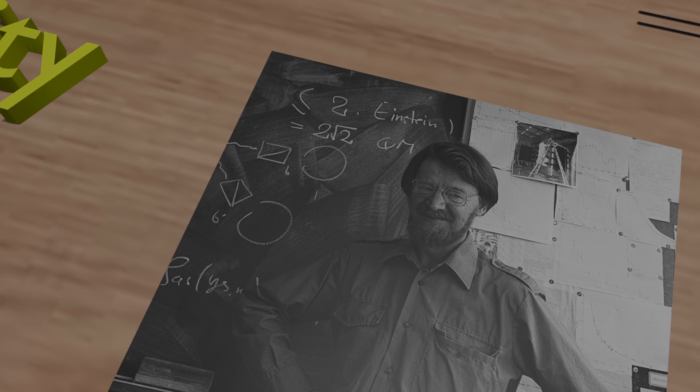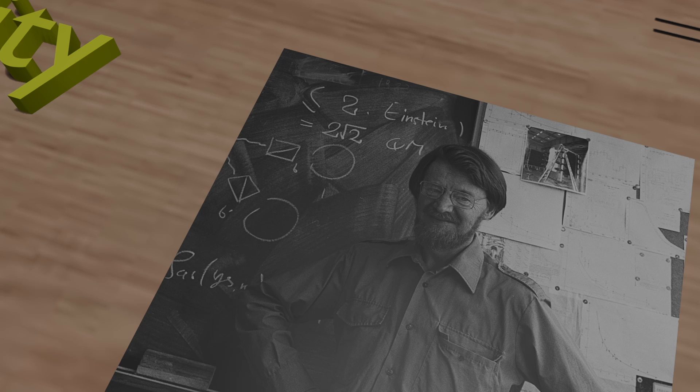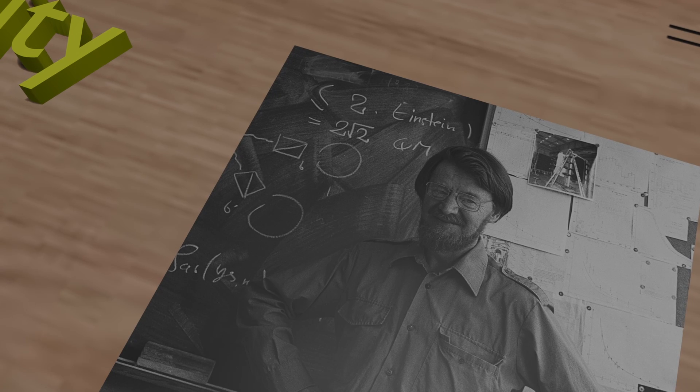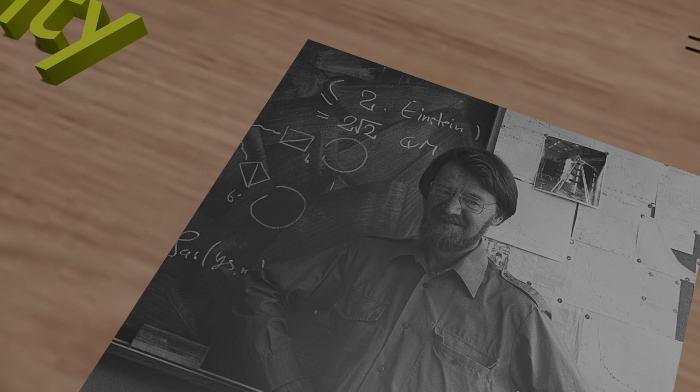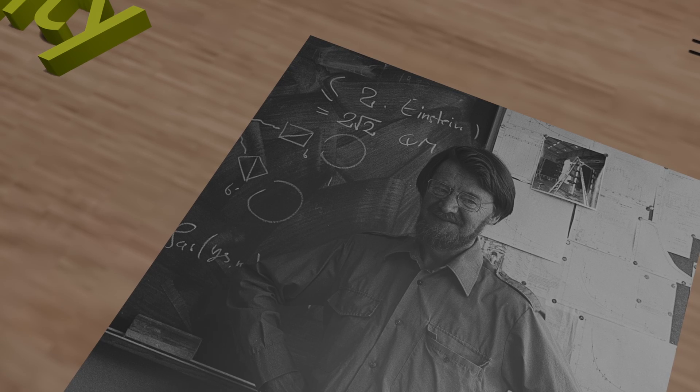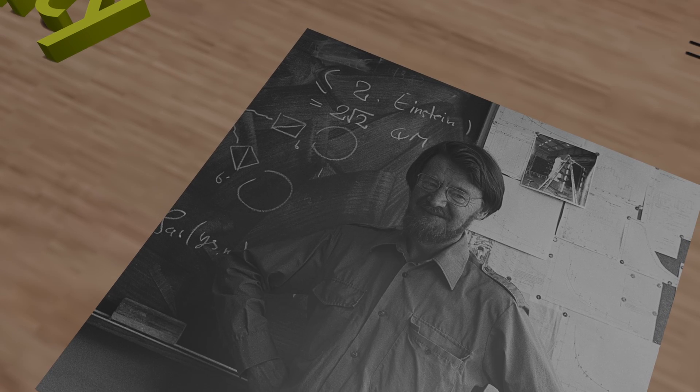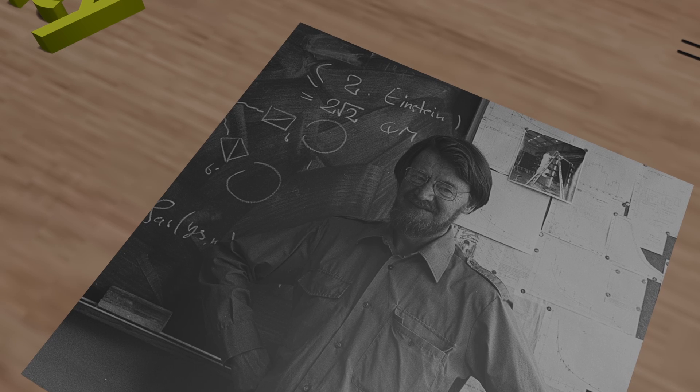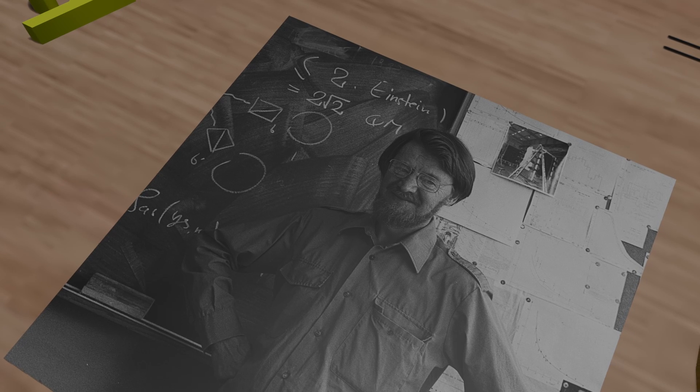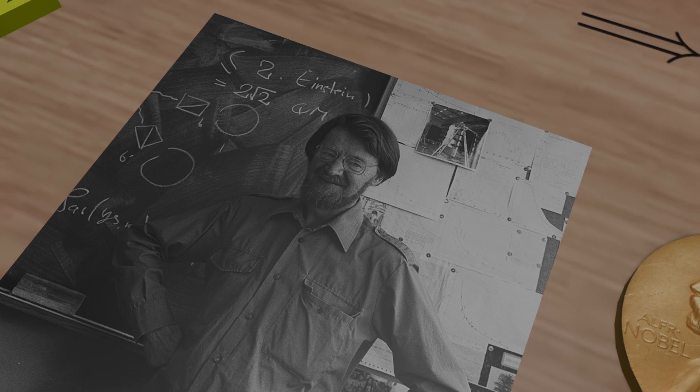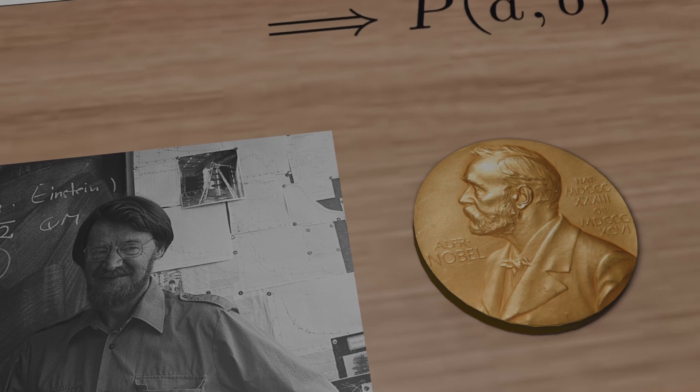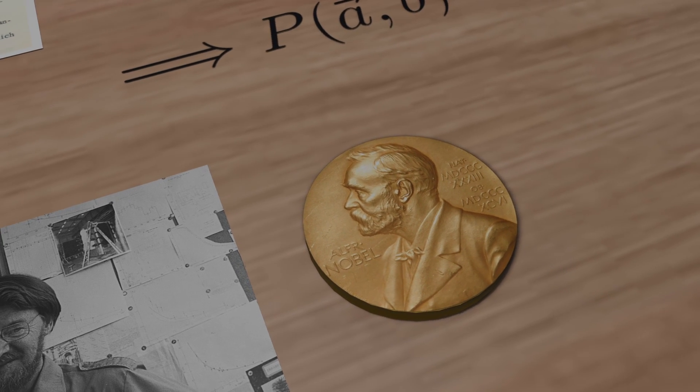Bell was skeptical about the idea that physics was close to a final, complete theory and maintained a deep curiosity for the limits of scientific knowledge. Bell passed away unexpectedly from a cerebral hemorrhage in 1990 at the age of 62. Unknown to Bell, he had reportedly been nominated for the Nobel Prize that same year.